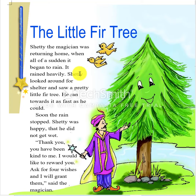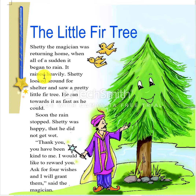Once Shetty was returning home. Returning means coming back. When all of a sudden it began to rain — it rained heavily. Heavily means too much, so it was raining too much. Shetty looked around for shelter. Shelter means to get protection. Shetty looked around and went under the fir tree to save himself from the rain.